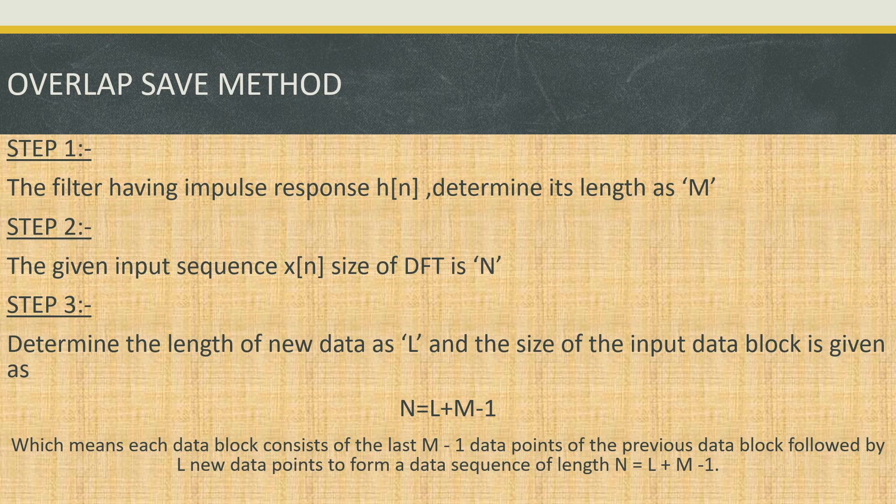In the overlap save method, the first step is to determine the length of the filter's impulse response h(n), which we define as M. In the second step, we determine the length of our input sequence x(n) as N. In the third step, we determine the length of our new data as L, and we define the size of our input data block as N = L + M - 1, meaning the data block consists of M-1 points of the previous data followed by L points of new data.